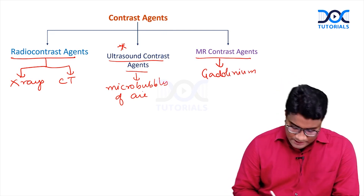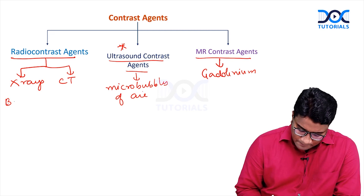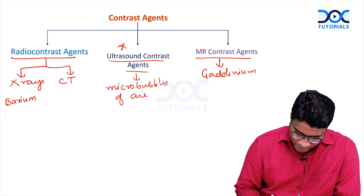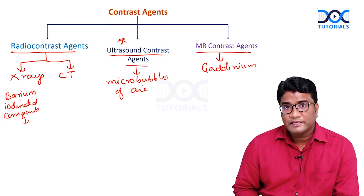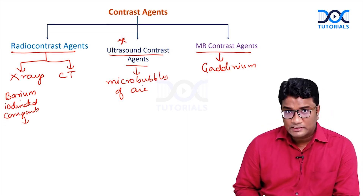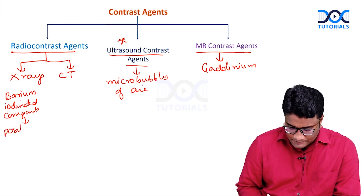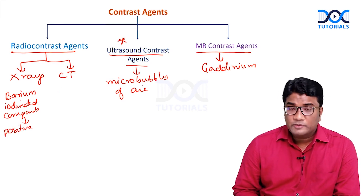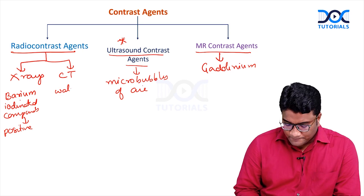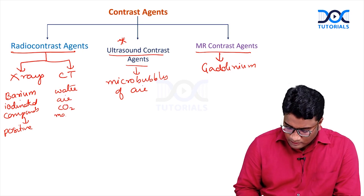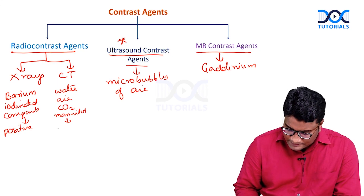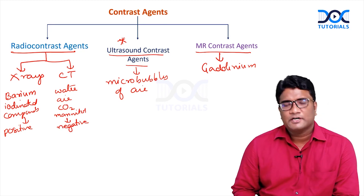Radio contrast agents can be barium or iodinated compounds. These are bright on the radiographs and appear white, so these are positive contrast agents. They can also be negative contrast agents like water, air, carbon dioxide, and mannitol — all of these appear darker than the surrounding tissue.